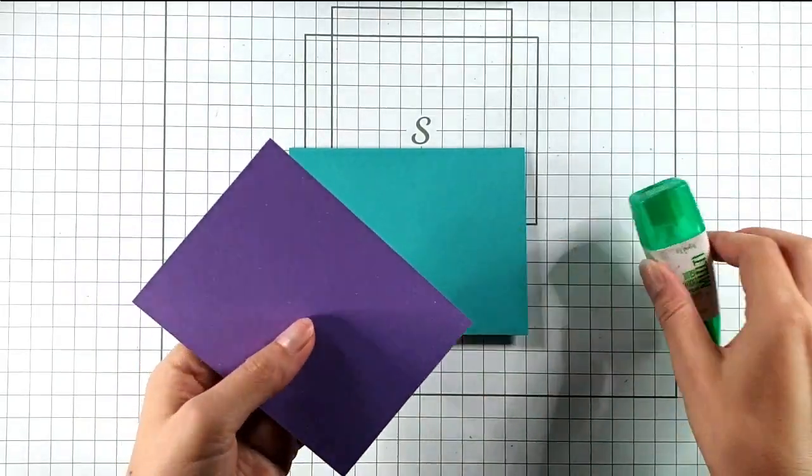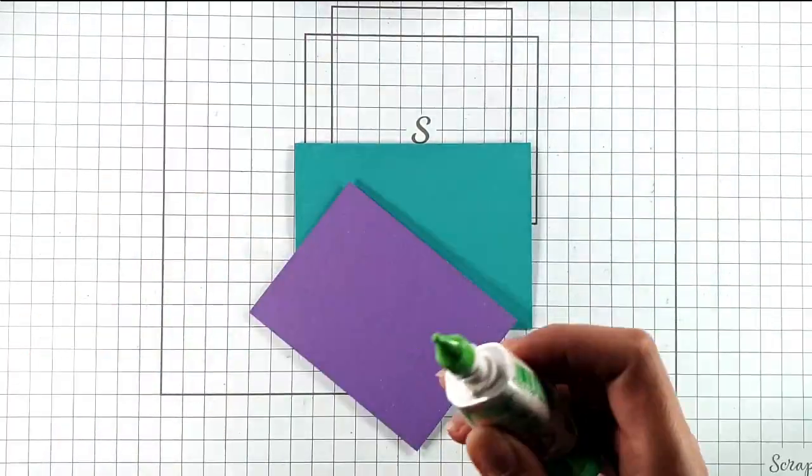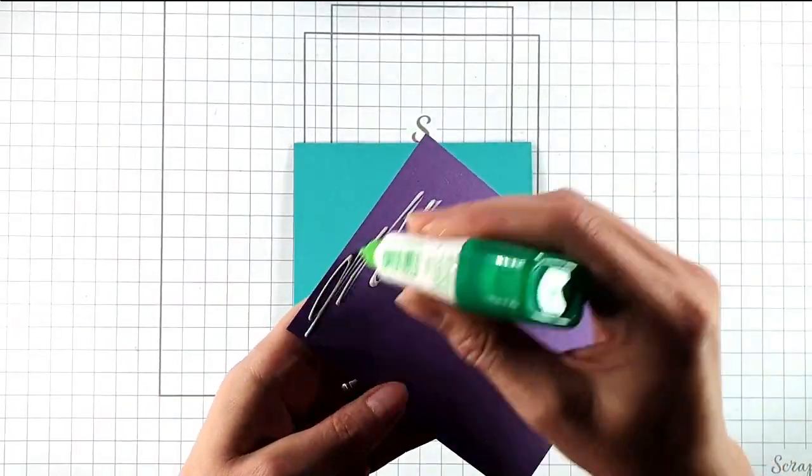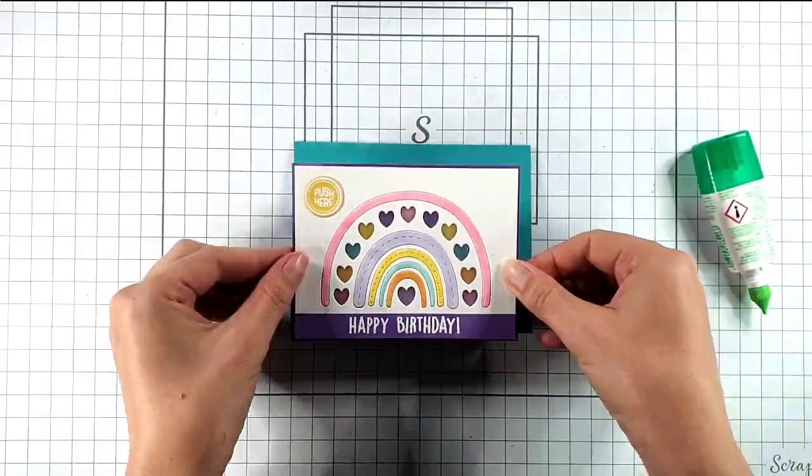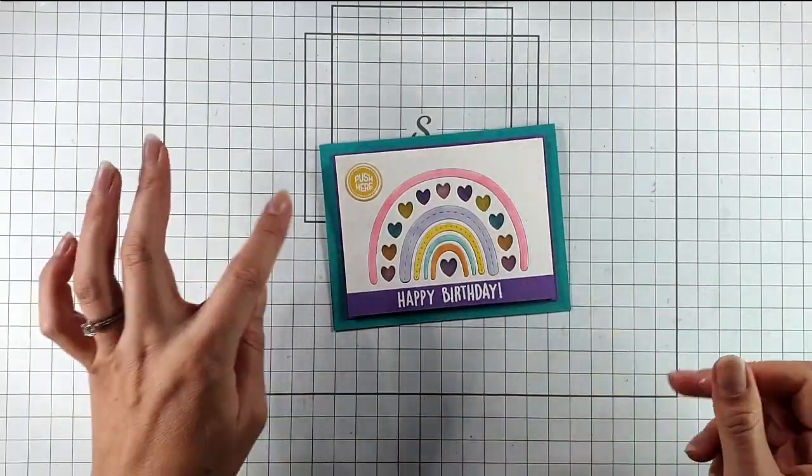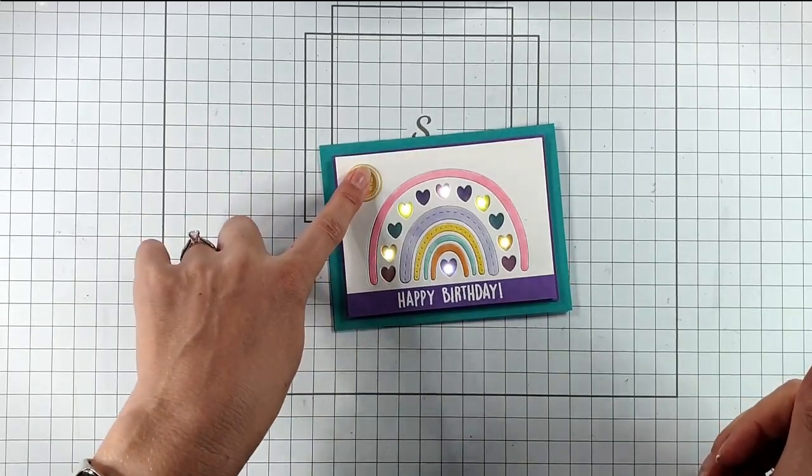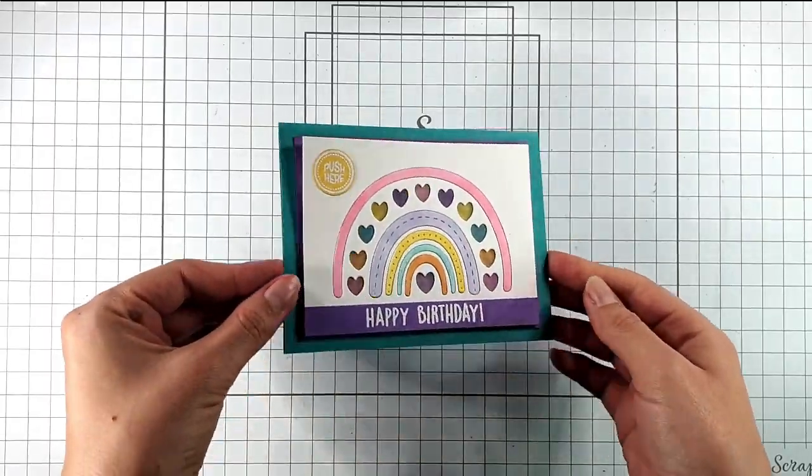So then I decided to go with this teal card blank to add a bit of extra color so I'm going to just glue the rainbow panel onto the card blank. There we've got our finished card so we can press it to light it up and I think that looks really cute.